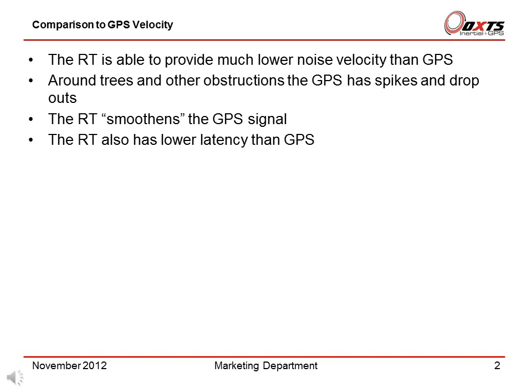Speed and velocity are very important quantities for vehicle testing. Car customers assess the vehicle based on acceleration times and braking distances. Both these measurements require accurate, noise-free speed measurements. Most vehicle test tracks do not have trees, but where there are trees the performance of GPS velocity is reduced.